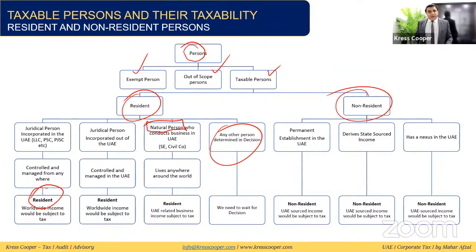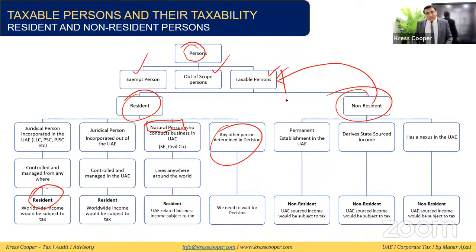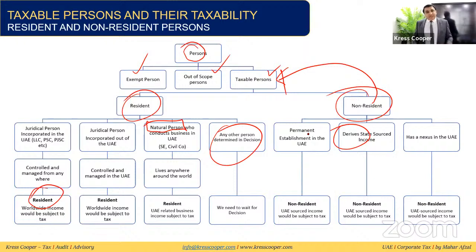Non-resident taxable persons include: a permanent establishment of a non-resident person in the UAE; any non-resident person who derives any UAE-sourced income, which will be subject to tax in the UAE; and any non-resident person who has a nexus with a business in the UAE and is earning UAE-sourced income.